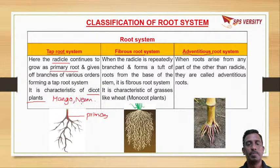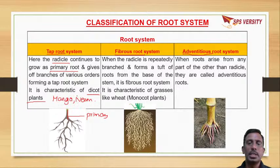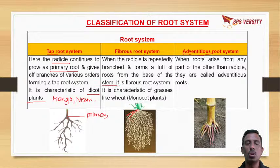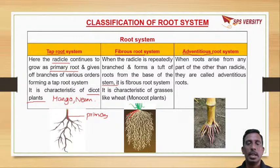In a fibrous root system, the radicle is short-lived. From the base of the stem it forms a tuft of roots - you can see a tuft of roots coming from the base of the stem. It is generally seen in monocot plants like grass, wheat, and maize.